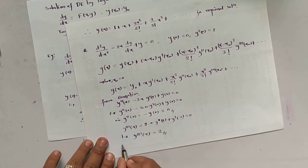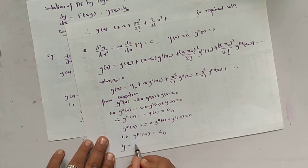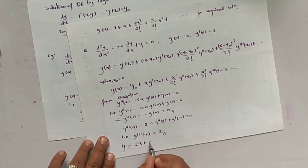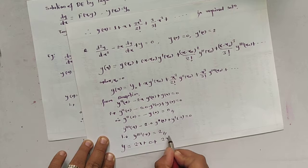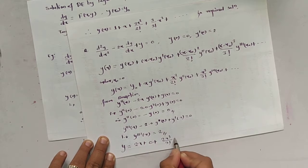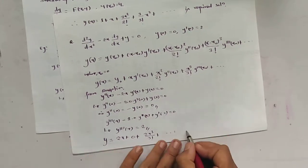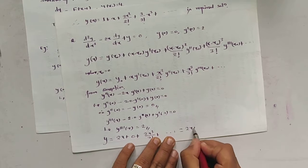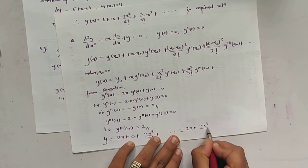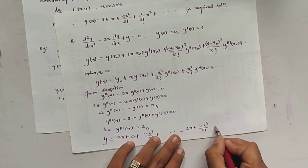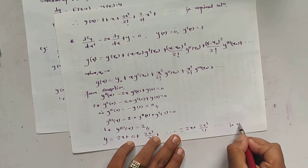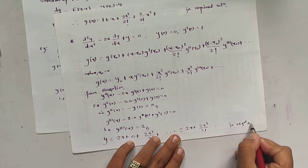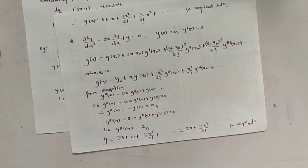Our required solution is y(x) = 2x + 0 + 2x³/3! + ··· which is the required solution. In this way, we have solved the differential equation by using the Taylor series method.